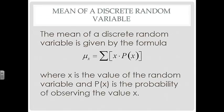The mean of a discrete random variable is given by this formula. Mu sub X is equal to the sum of each X value times its probability. So you take the X value times the probability, and add that to the next X value and its probability, and so on and so forth. X is the value of the random variable, and P is the probability of observing that value.